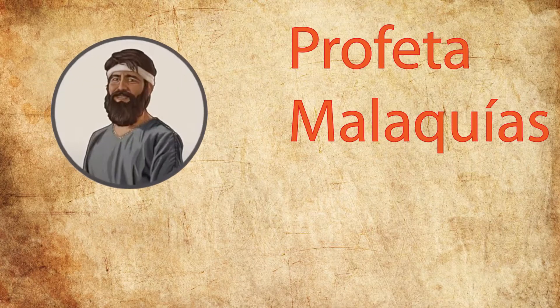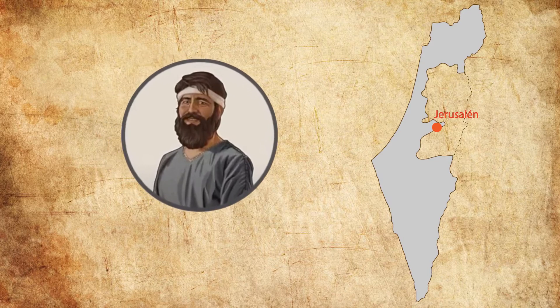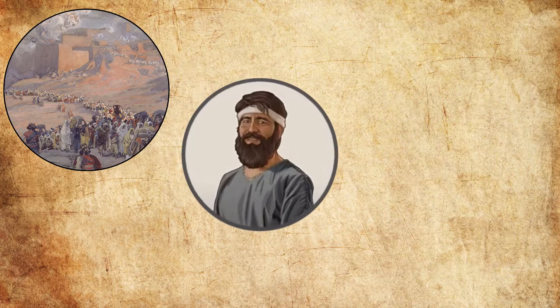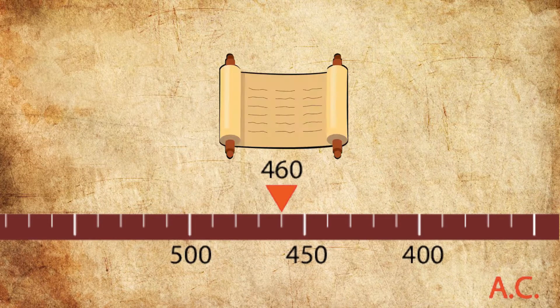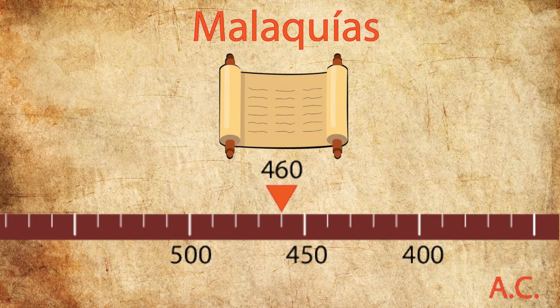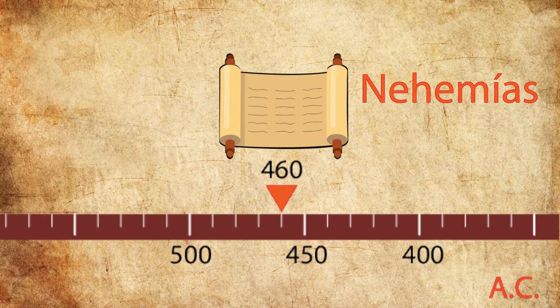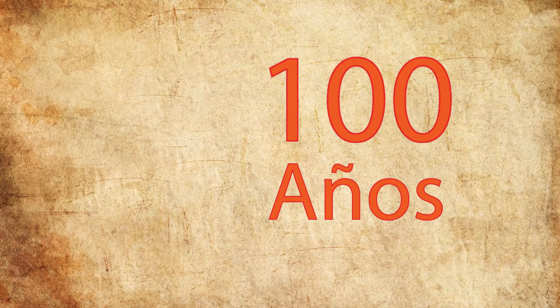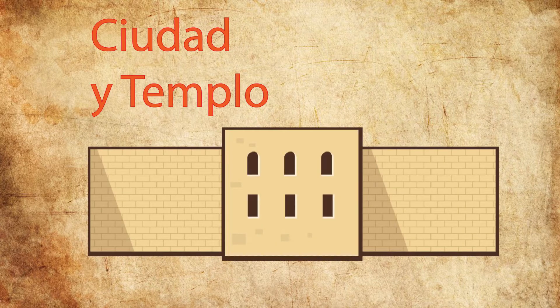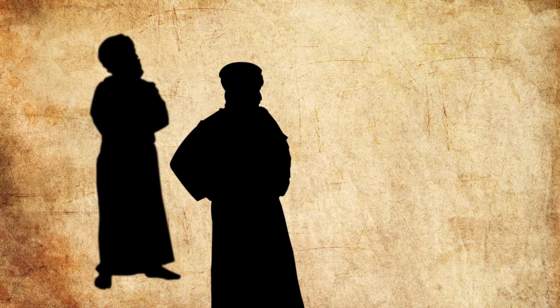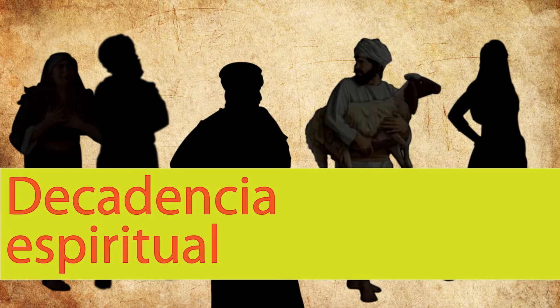Ahora vamos a conocer de qué trata el libro de Malaquías. El profeta Malaquías escribió este libro en Jerusalén después que los judíos regresaran de la esclavitud en Babilonia. Los estudiosos piensan que posiblemente escribió la profecía alrededor del 460 a.C., después que los profetas Hageo y Zacarías escribieran sus libros, posiblemente en la misma época que Nehemías. Hacía casi 100 años que los primeros judíos exiliados habían regresado a Jerusalén.